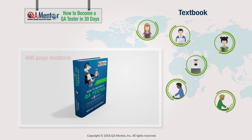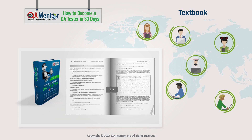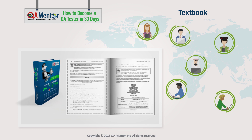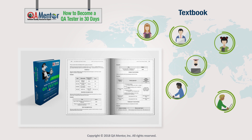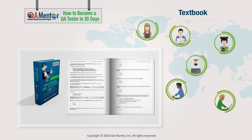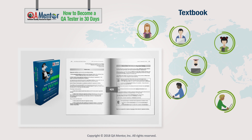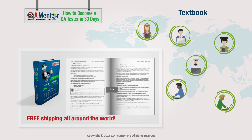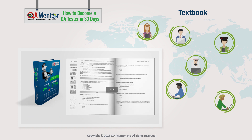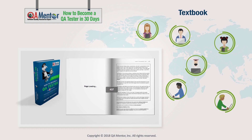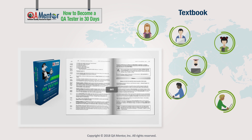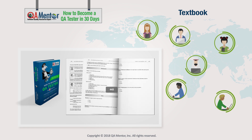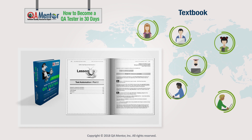Textbook: you will get a 600-page textbook with all the course materials. The textbook is professionally printed by Amazon and all of our students love its language, nice formatting, and big size. We ship the textbook free all around the world. The textbook is a valuable helper to review materials and take studies offline if needed. Many students consider the textbook their QA Bible, and they consult it even after they get employed.